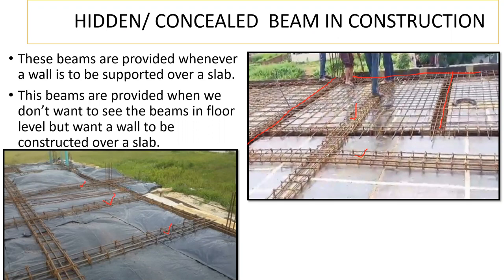Why are these beams provided? Let's say once the slab is cast, I want to construct a wall over it. I cannot directly trust my brick wall on the slab because the slab will not be in a position to transfer the load. So if I put a beam, the beam will be capable of transferring the load — that is the reason we provide this hidden or concealed beam.